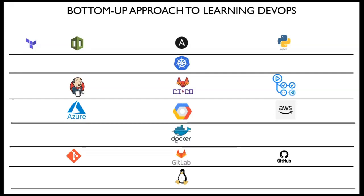A participant asks about the tool logos shown on the slide. The instructor identifies them: Terraform, CloudFormation, Ansible, Python, Kubernetes, Jenkins, GitLab CI/CD, GitHub Actions — those are CI/CD tools. The cloud providers shown are Azure, Google Cloud Platform, and AWS. Also shown: Docker, Git, GitLab, and GitHub.